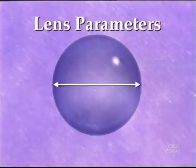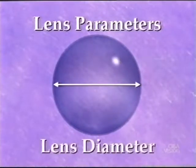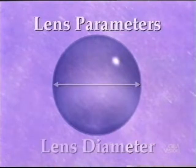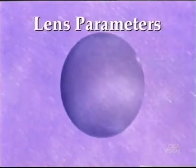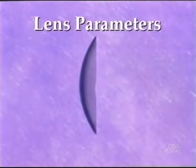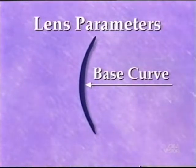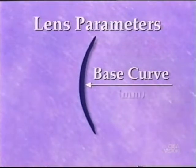The width of the lens at its widest point is called the lens diameter. The curvature of the central back surface is called the base curve. The base curve is always concave and is expressed in millimeters of radius.